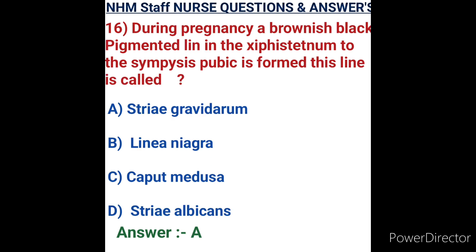Question number sixteen (mentioned out of order): during pregnancy, the brownish-black pigmented line from the xiphisternum to symphysis pubis is called. Options: A) striae gravidarum, B) linea nigra, C) caput medusae, D) striae albicans. Striae gravidarum are atrophic linear scars present during pregnancy, starting between the sixth and seventh months. Linea nigra is the dark vertical line with stretch marks seen on the skin during pregnancy. Option A, striae gravidarum, is the correct answer.